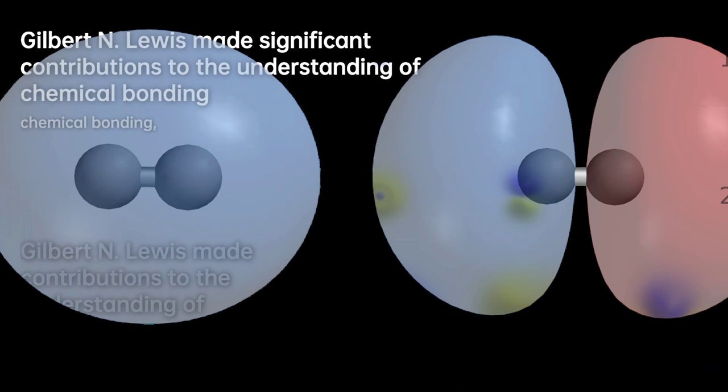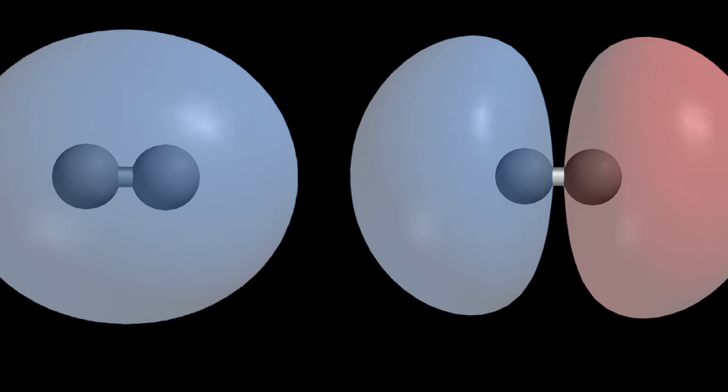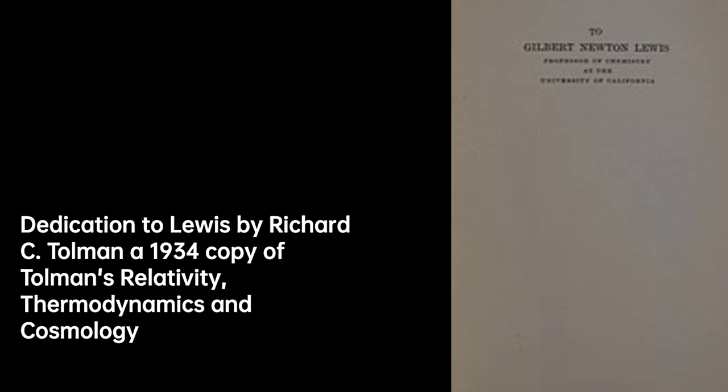His revolutionary ideas, such as the Lewis dot structures and his valence bond theory, have shaped modern theories of chemical bonding. Lewis's brilliance extended to other areas of study as well, including chemical thermodynamics, photochemistry, and isotope separation.